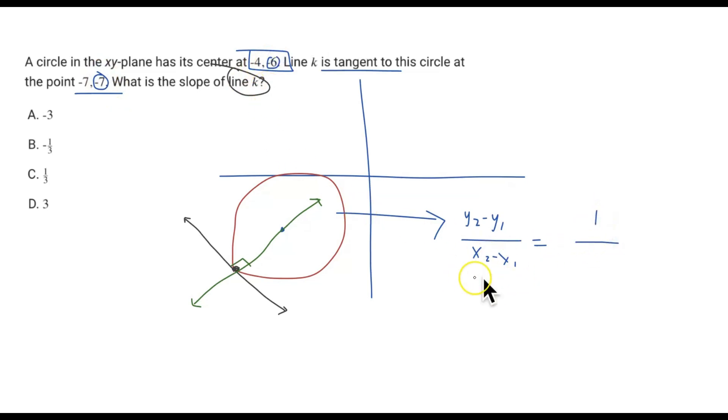So positive 1 on top. Now the change in x, going from -7 to -4, is an increase of positive 3. So we know the slope of this line is 1/3, which makes sense because if you look at the diagram, it is positive—it's going to be positively linear—and therefore a positive slope of 1/3 makes sense.